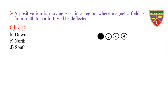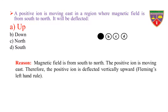Therefore, the correct option is A. Reason: Magnetic field is from south to north. The positive ion is moving east. Therefore, by Fleming's left-hand rule, the positive ion is deflected vertically upward. Hence, the positive ion is deflected up.